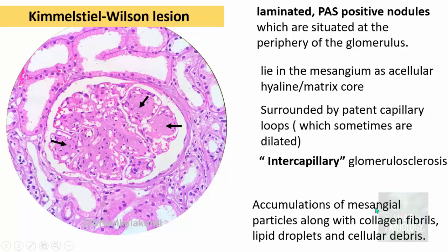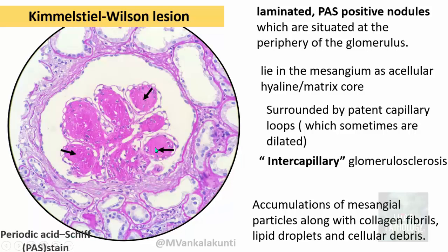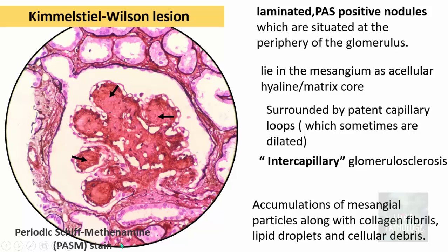Kimmelstiel-Wilson nodules consist of accumulations of mesangial particles along with collagen fibrils, lipid droplets, and sometimes very rarely cellular debris, though they are predominantly acellular. When stained by Masson's trichrome, they take the stain beautifully. They are also demonstrated by PAS stain and PASM (periodic acid-silver methenamine) stain. These special stains are used to demonstrate these nodules.